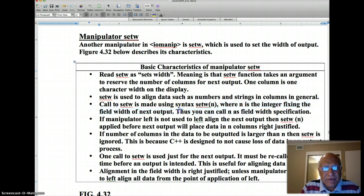The syntax of call to setW looks like this: setW(n), where n is an integer that fixes the field width of next output. In other words, you can say n as field width specification. Field width and number of columns and number of characters are the same thing in this case. Actual characters may be different. If manipulator left is not used, which left aligns the next output, then setW applied before next output will place data in n columns right justified.